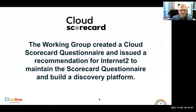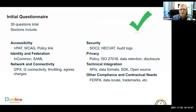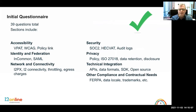Internet2 created a working group to look at this. What we came up with was a questionnaire that we submitted back to Internet2 and recommended they adopt to build this discovery platform. Our group came up with 39 questions in total across these major service areas, with the idea that vendors answering these questions would allow us to quickly sort through vendor service offerings, identify responses that are critical to us, and pick the ones that match and meet our service needs.